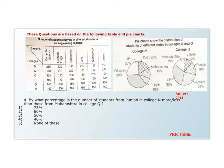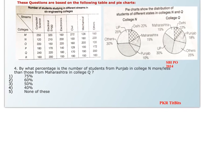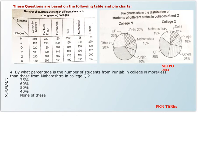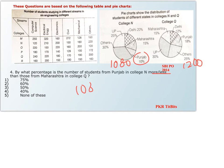The next question asks: by what percent is the number of students from Punjab in college N more or less than those from Maharashtra in college Q? We already calculated the total students in college N as 1080 and college Q as 1200. Students from Punjab in college N: Punjab is 10%, so 10% of 1080 is 108. Students from Maharashtra in college Q: Maharashtra is 15%, so 10% of 1200 is 120 and 5% is 60, giving 180.